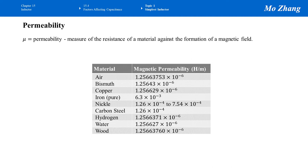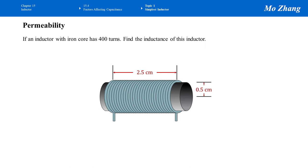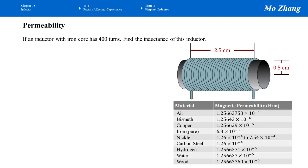Let's work on this example. We have a simplest inductor as shown here has 400 turns. The length is 2.5 cm. The diameter of that circular cross-sectional area is 0.5 cm. What is the inductance of this inductor? So put this picture to the side and then put the table here. We know this is made of iron, iron core. So the number is 6.3 times 10 to the negative 3 Henry per meter. And now let's find the inductance of this inductor.